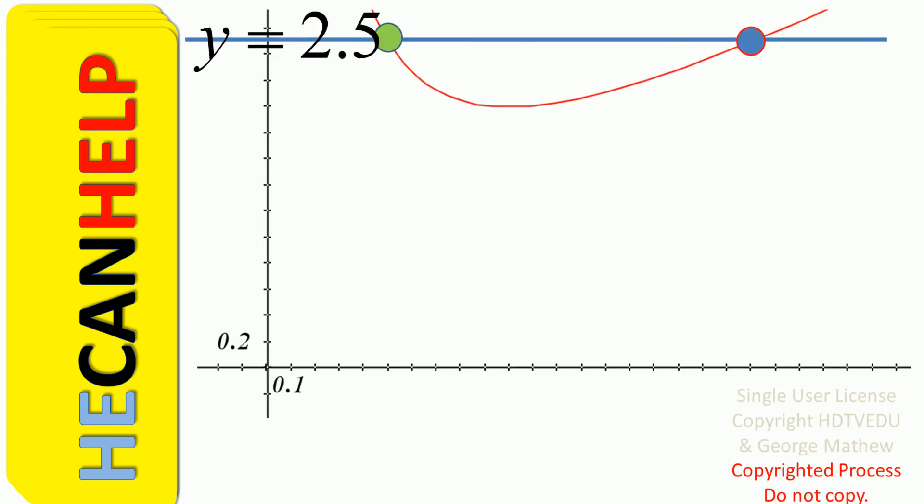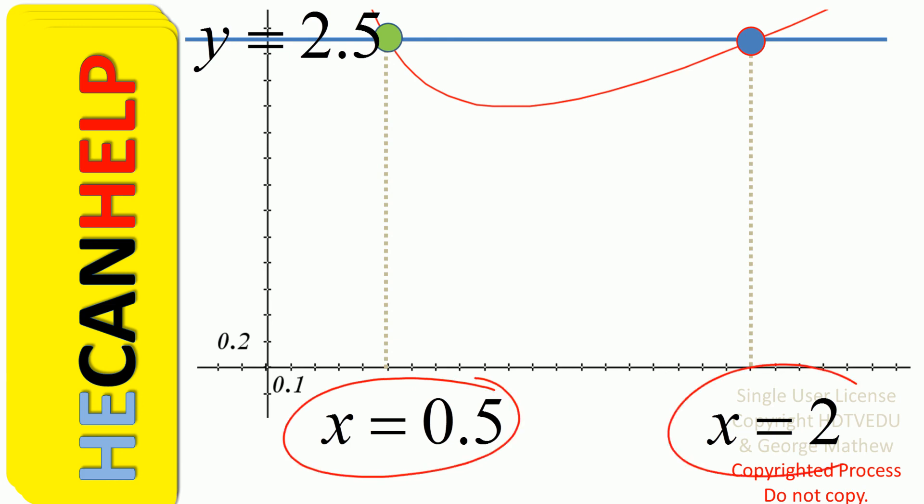y equals 2.5 is a horizontal line and you see this point and this point. For those points, what are the x values? 0.5 and 2.